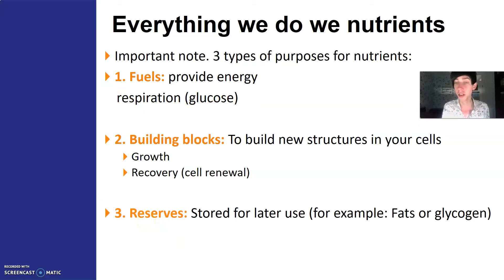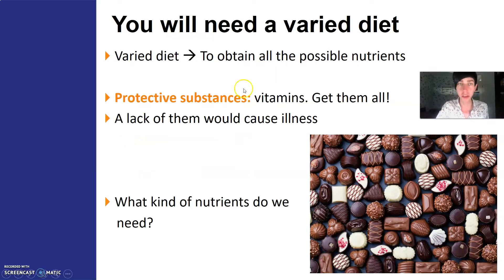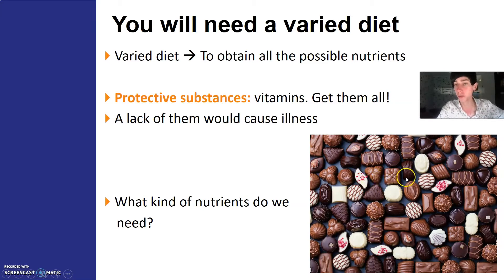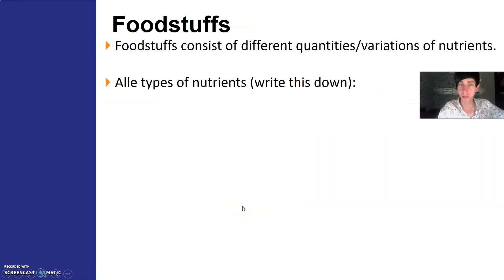Fats and glycogen are important reserve nutrients — glycogen is a special one I'll come back to later. Unfortunately, if we eat too much, you can see it in your belly. You will need a varied diet to obtain all the possible nutrients, because there are a lot of them. A picture of many colors and shapes might look varied, but a diet of only chocolate does not count as a varied diet — you do not get all the nutrients from this. There are not a lot of vitamins in chocolate, for example. So what kind of nutrients do we need?